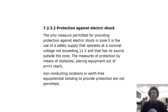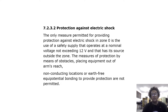The only measure permitted for providing protection against electric shock in zone 0 is the use of a safety supply that operates at a nominal voltage not exceeding 12 volts and that has its source outside the zone. The measures of protection by means of obstacles, placing equipment out of arm's reach, non-conducting locations, or earth-free equipotential bonding to provide protection are not permitted.